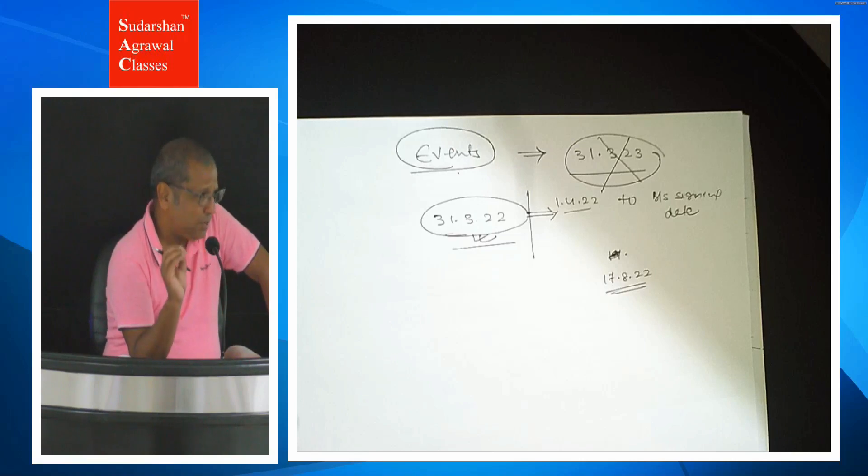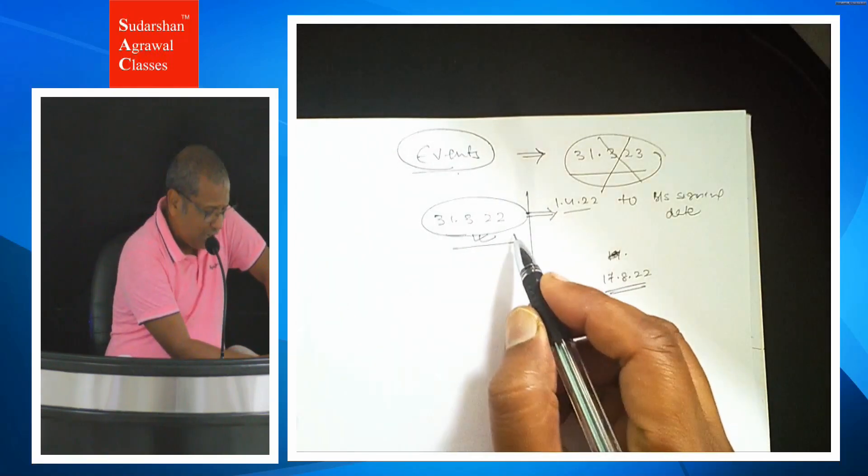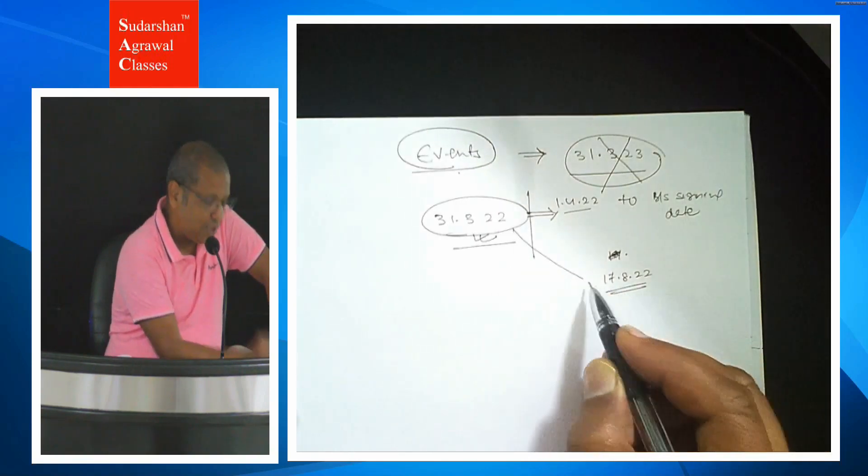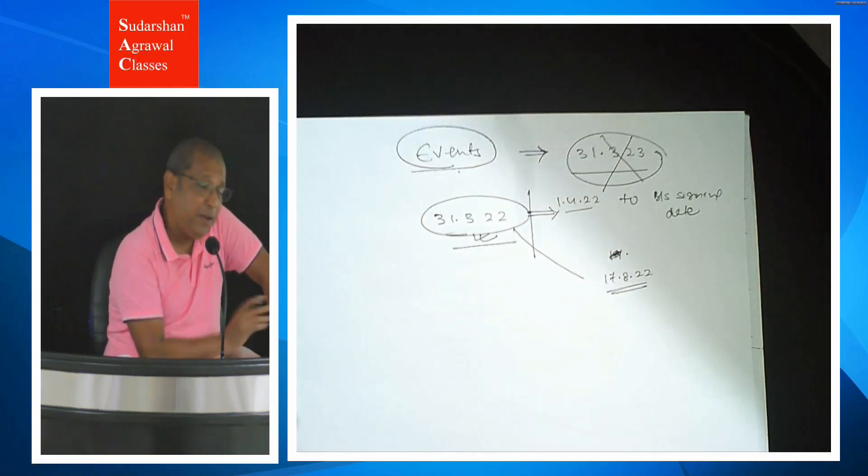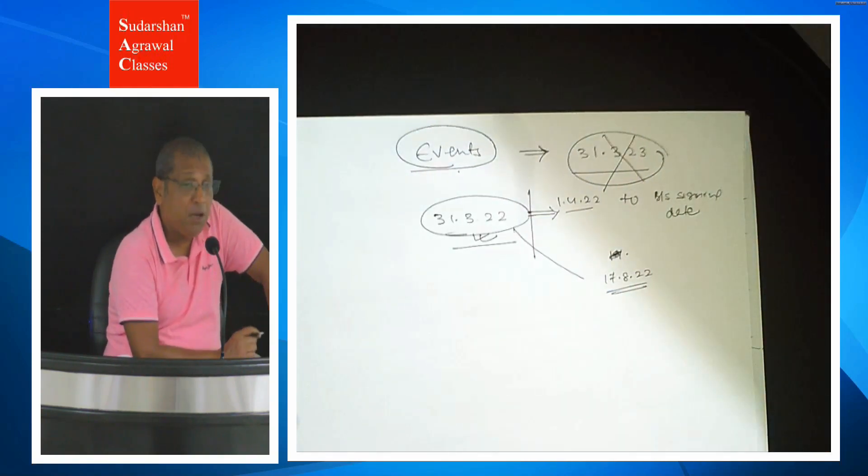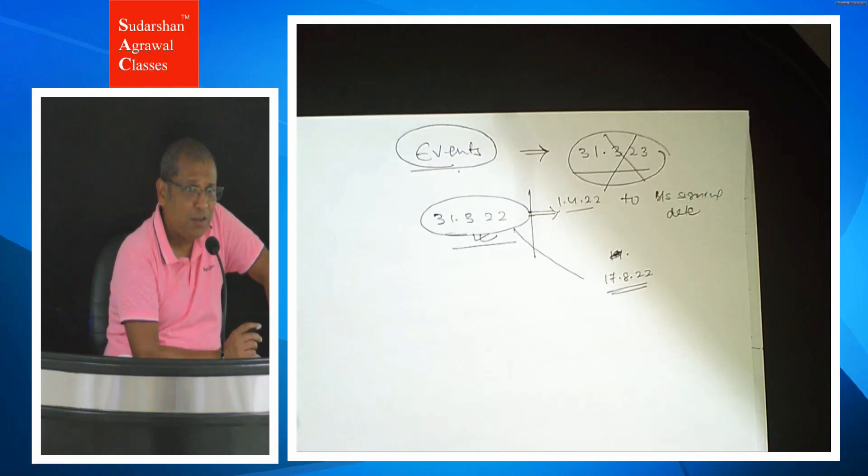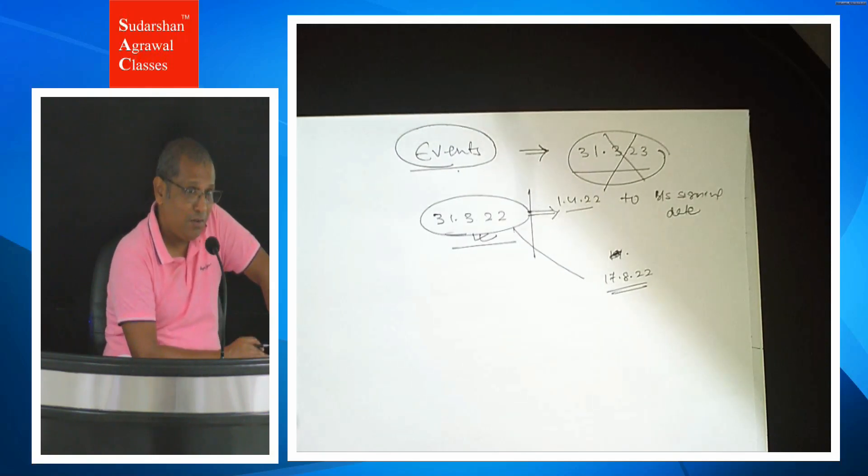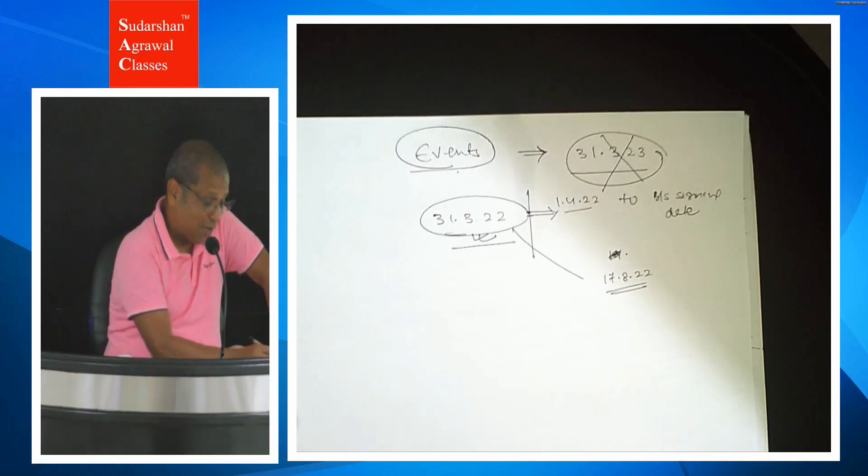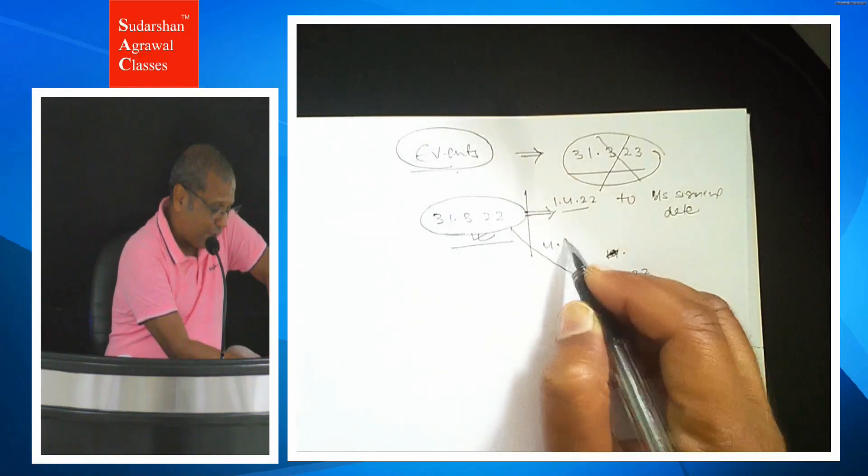So a normal thing - you start believing that 1st April to 17th August, about 5 and a half months. April, May, June, July - 4 months. About 4 and a half months. So this is the 4 and a half month period.